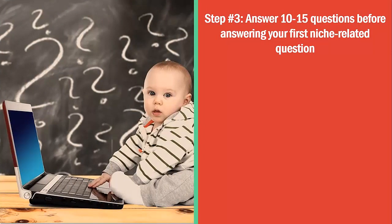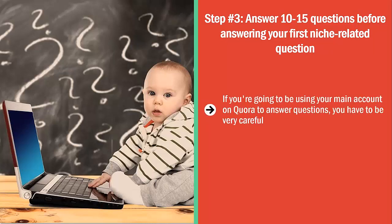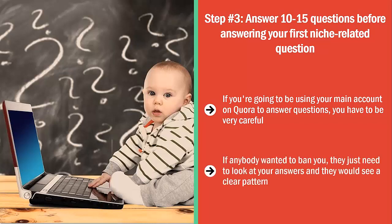Step number three: answer 10 to 15 questions before answering your first niche-related question. If you're going to be using your main account on Quora to answer questions, you have to be very careful. You can't just answer all questions that are directly related to your niche and forget about everything else. If anybody wanted to ban you, they just need to look at your answers and they would see a clear pattern — that you were only answering a certain type of question and dropping your link all over the place. That's a dead giveaway. Instead, answer 10 to 15 questions across a wide range of topics before answering a question directly related to your niche.